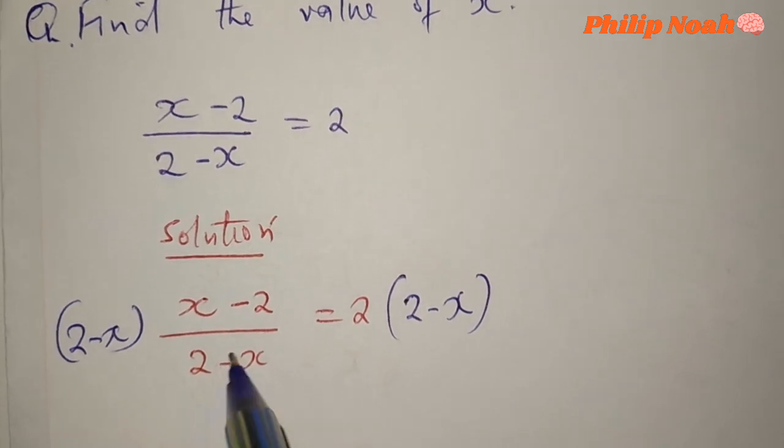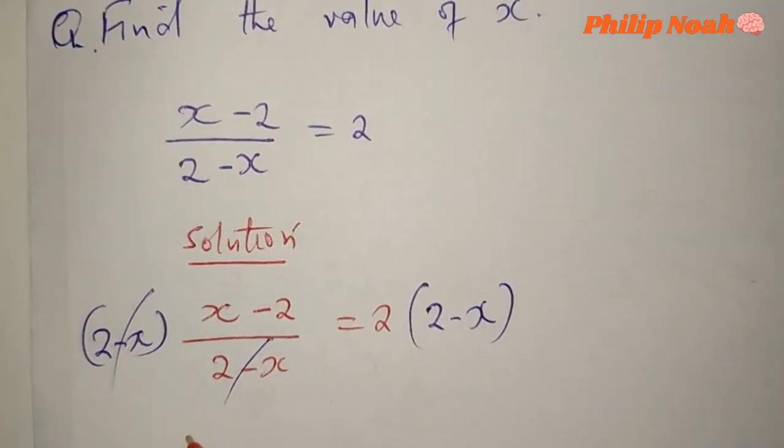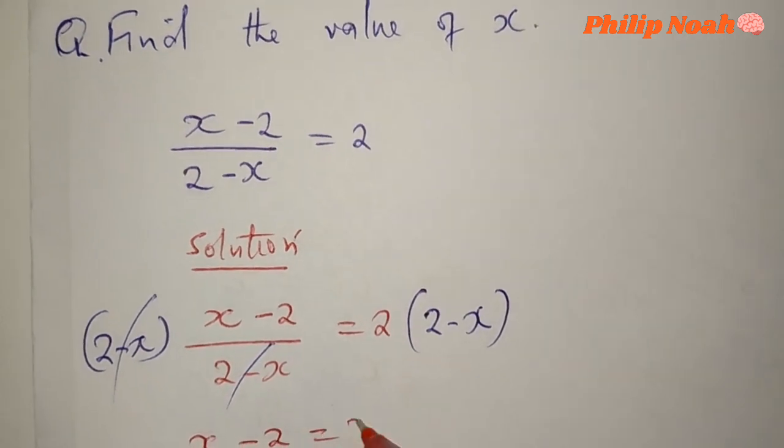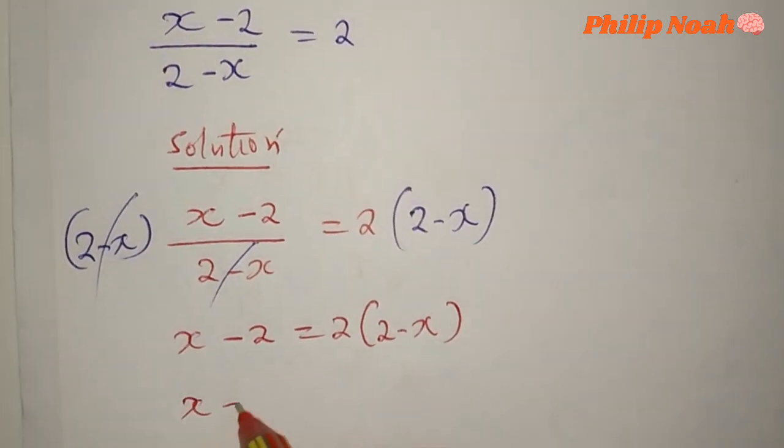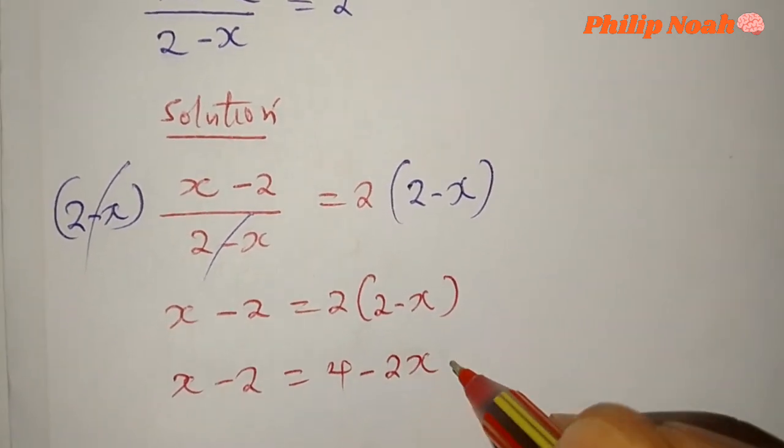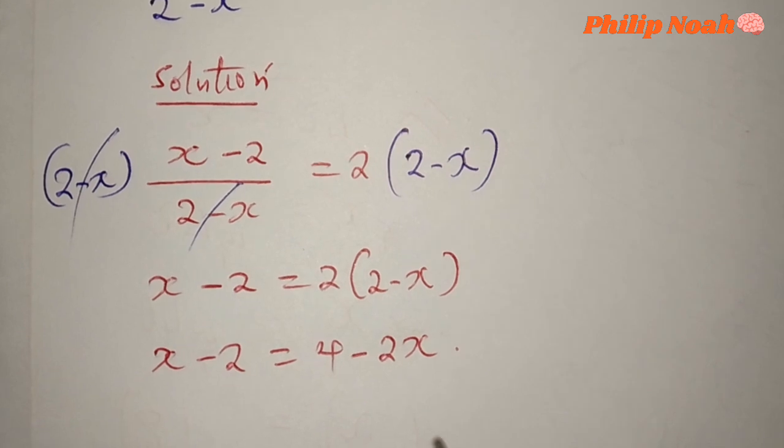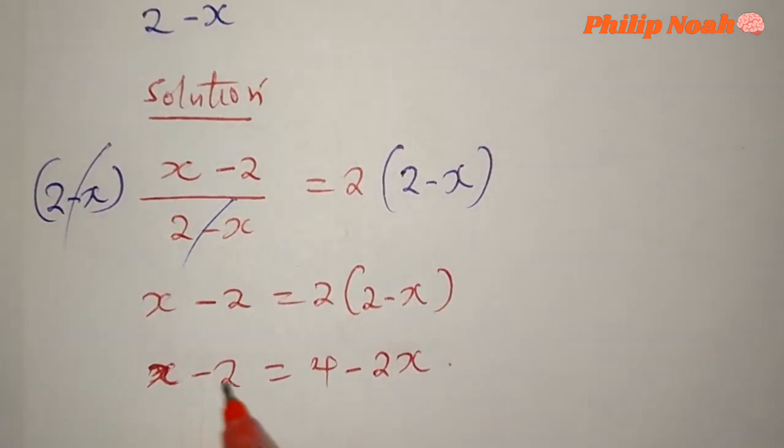So this and this cancels out and we remain with x minus 2 equals 2 times 2 minus x, which is the same as x minus 2 equals 4 minus 2x. At this point we shall collect like terms so that x and x be on one side and the constant on the other side of the equal sign.